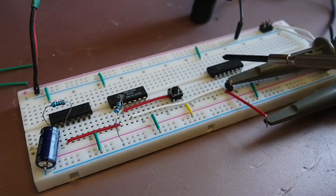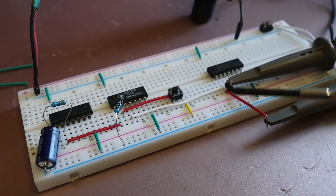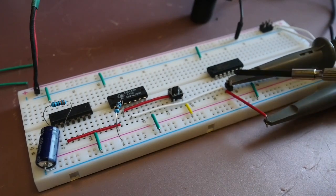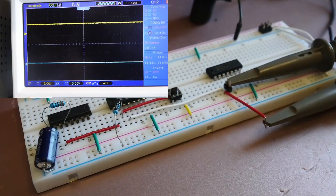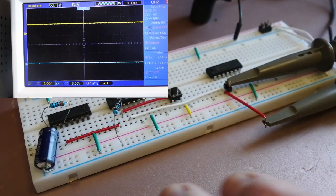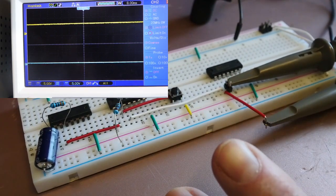And I've got the output of that first NAND gate going to the input of the first inverter on this chip. Channel one of the scope is attached there. Channel two of the scope is attached to the output.